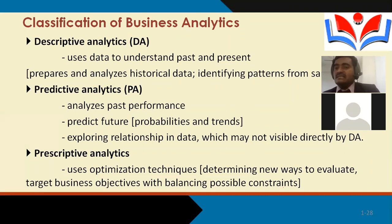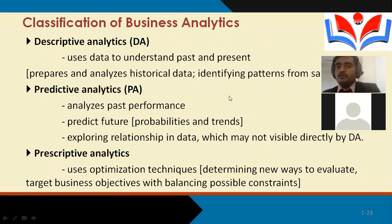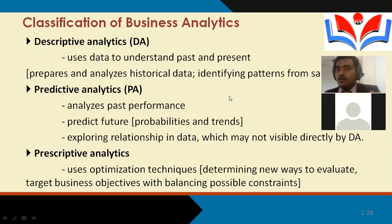For example: what was the sales in 1995, 2000, 2005, 2010, 2015, 2020? You can plot this with the help of bar charts, pie charts, and tables to understand the phenomena. Descriptive analytics describes the situation with the help of past data — it explains what happened, when it happened, and how it happened.